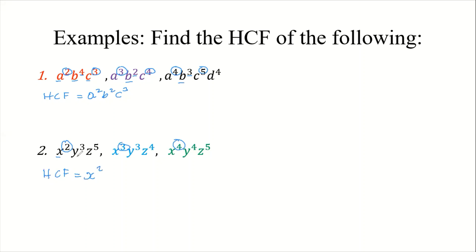Then we look at y, which is common to all three terms. The powers are third, third, and fourth, so the lowest is y³. Then we look at z, which is also common to all three. The powers are five, five, and four — so the lowest is z⁴. Therefore, the HCF of these three algebraic terms is x²y³z⁴.